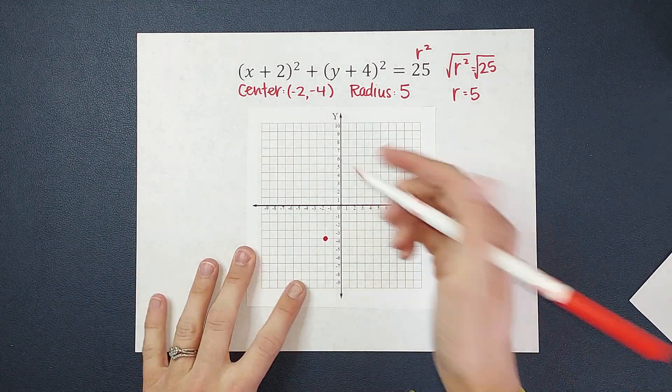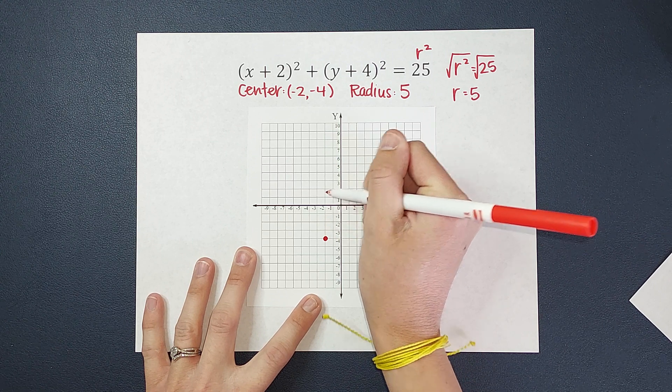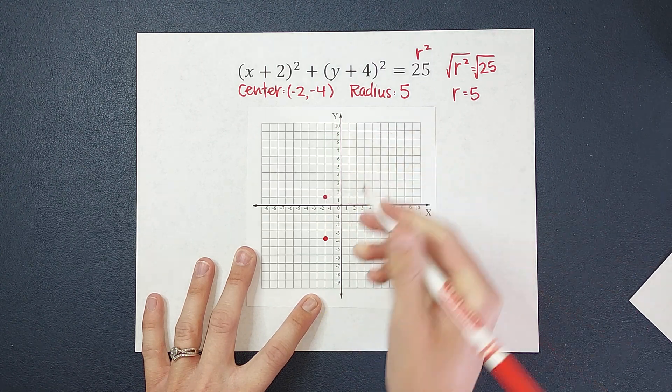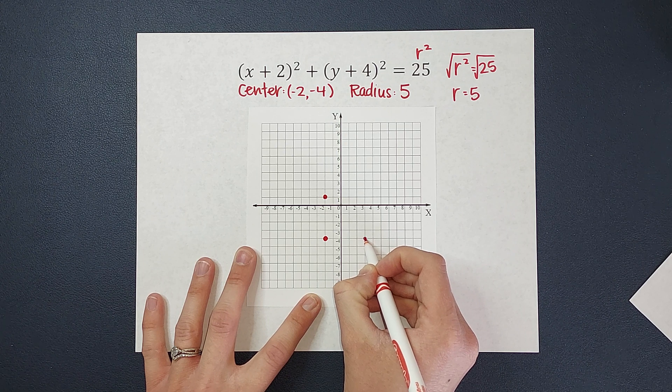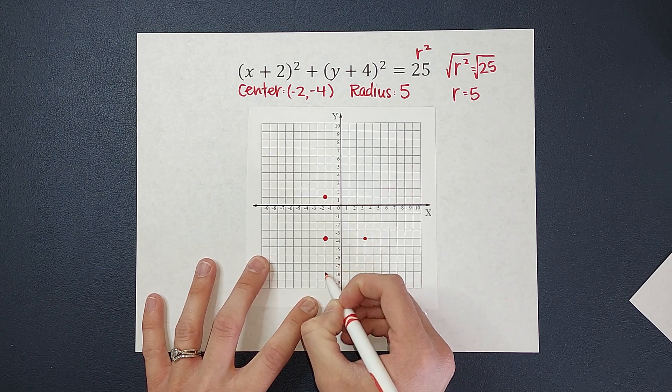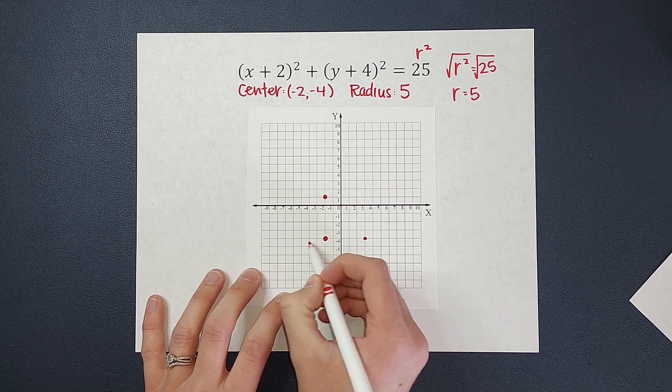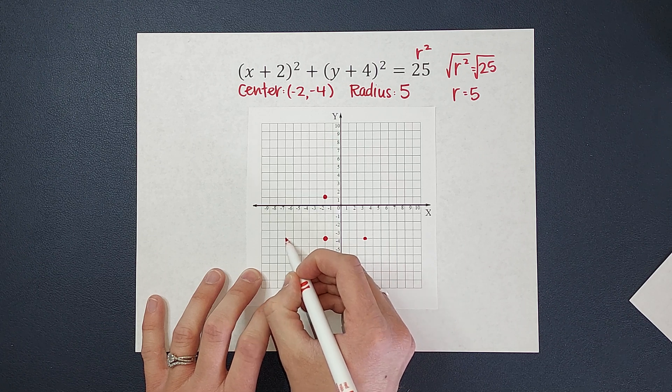So I'm going to go up 5, 1, 2, 3, 4, 5. To the right 5, 1, 2, 3, 4, 5. Down 5, 1, 2, 3, 4, 5. And to the left 5.